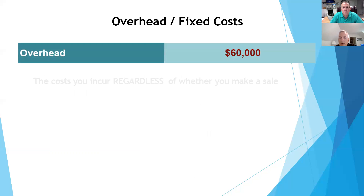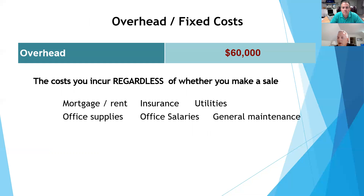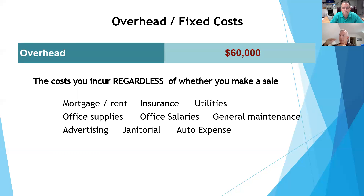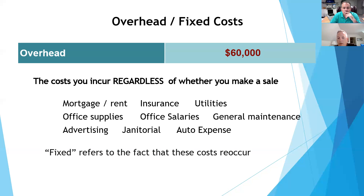Fixed costs are things you have to pay regardless of how much you make in sales — rent, insurance, utilities, office supplies, salaries. A commission salesperson's base salary is a fixed cost; only the commission component is variable. The dentist is a great example: the hygienist, front office, rent, air conditioning, utilities — all fixed no matter how much the dentist produces.